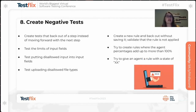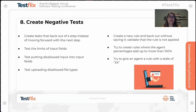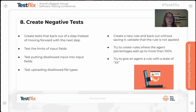Step eight is to create more negative tests. Create tests that back out of a step instead of moving forward. Test the limits of your input fields. Test putting disallowed input into input fields — for example, putting letters into a field that should only accept numbers. Test uploading disallowed file types. For my project, I created a new rule and backed out without saving to make sure that rule was not applied. I tried to create rules where the agent percentage added up to more than 100%, and I tried to give an agent a rule with a state of XX, verifying that I received an appropriate error message.